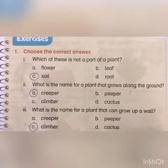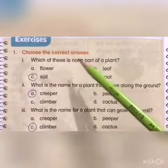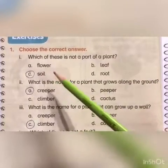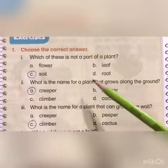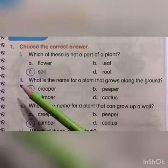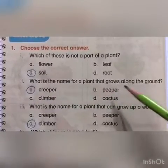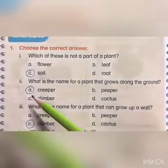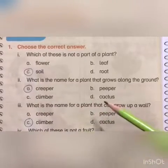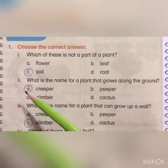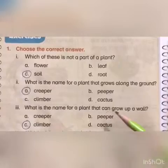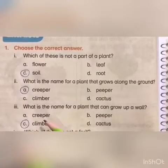Choose the correct answer. Number one: which of these is not a part of a plant? A) flower, B) leaf, C) soil, D) root. The correct answer is C) soil. Number two: what is the name for a plant that grows along the ground? A) creeper, B) peeper, C) climber, D) cactus. The correct answer is A) creeper.